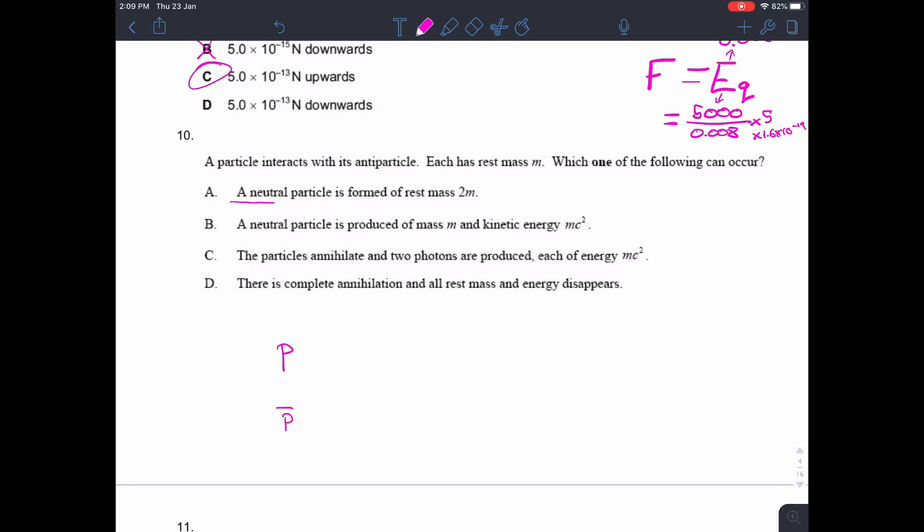Well, we're certainly not going to form a neutral particle of rest mass 2m, because as soon as a particle and an antiparticle meet, they annihilate. So, we're definitely not forming a neutral particle, so it can't be either of those two. It could either be C or D. So, either we produce two photons each of energy mc squared, or all rest mass and energy disappears.